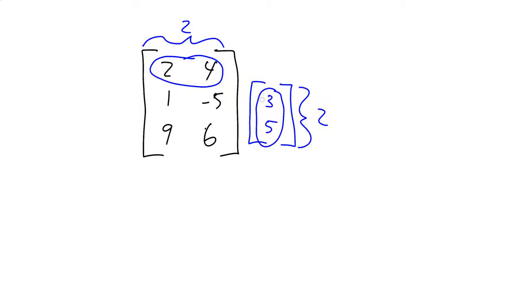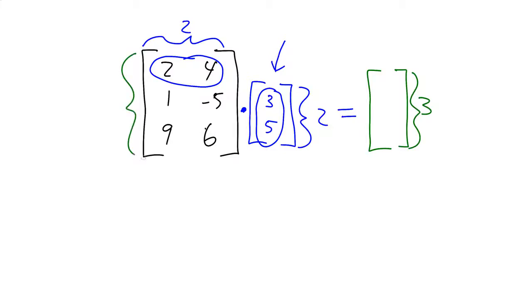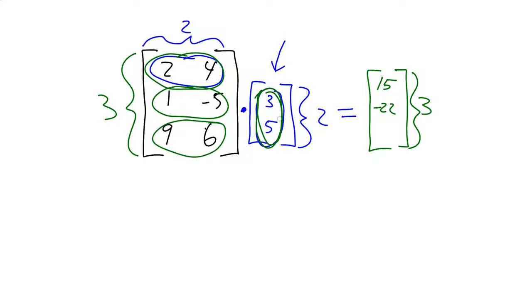So I can multiply by something like [3, 5] in order for the multiplication to make sense. That's a two-dimensional vector. The next question is: what do we get out? We get a three-by-one vector, because there are three rows. Taking [2, 4] dot [3, 5] gives 15; [1, -5] dot [3, 5] gives -22; and [9, 6] dot [3, 5] gives 57.